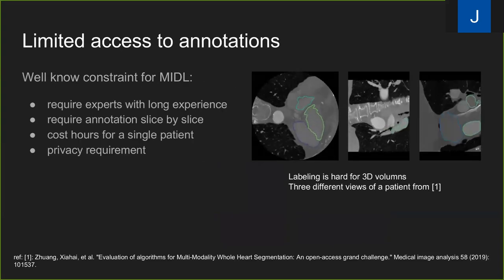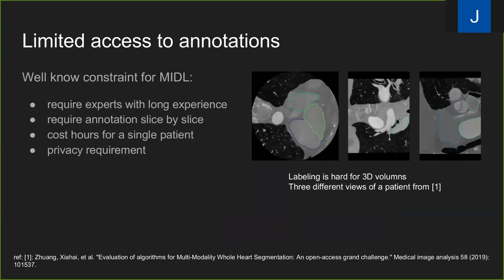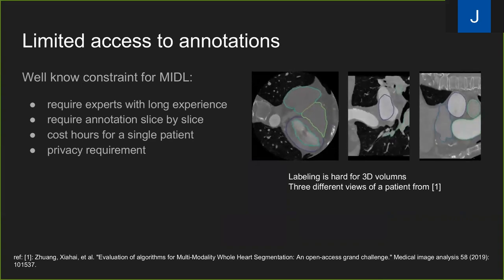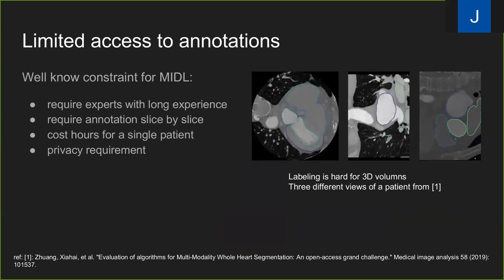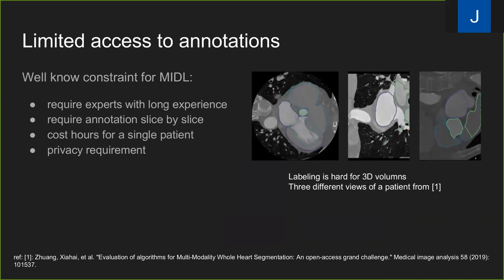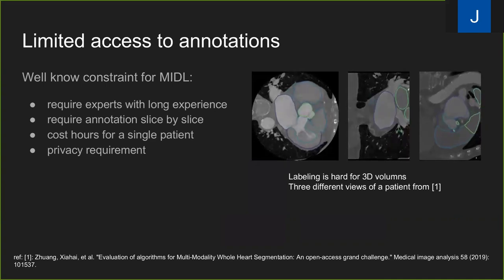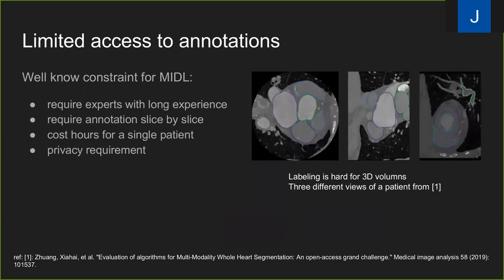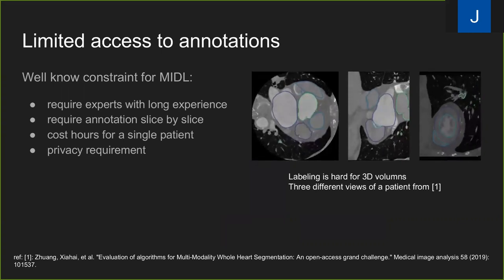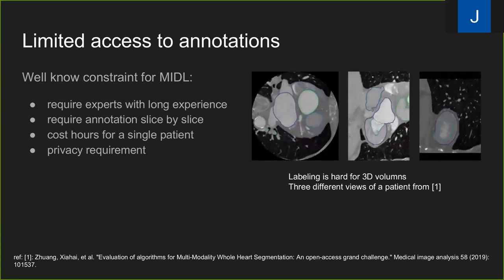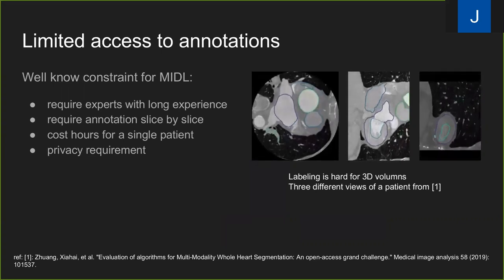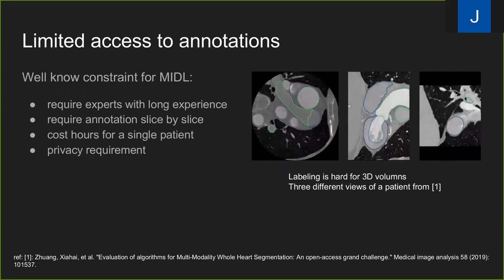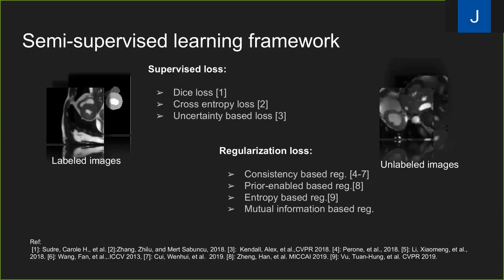Deep learning-based methods rely on large datasets with pixel-level annotations. Here we show a 3D cardiac image with annotation in three dimensions. As one can see, accurate annotation is expensive, hard to collect, and time-consuming. Usually, multiple experts have to be involved to get a golden standard.